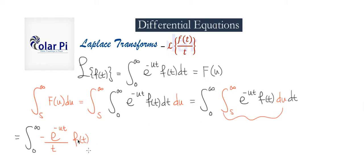So we place the negative out front and then the t. We evaluate from s to infinity, keeping all constants from the outer integral. Since f of t is a constant, we keep it and evaluate from s to infinity. If we plug in infinity for u, we get e to the negative infinity, which goes to zero. Then plugging in s, we have minus negative, so it's plus. We write dt there.